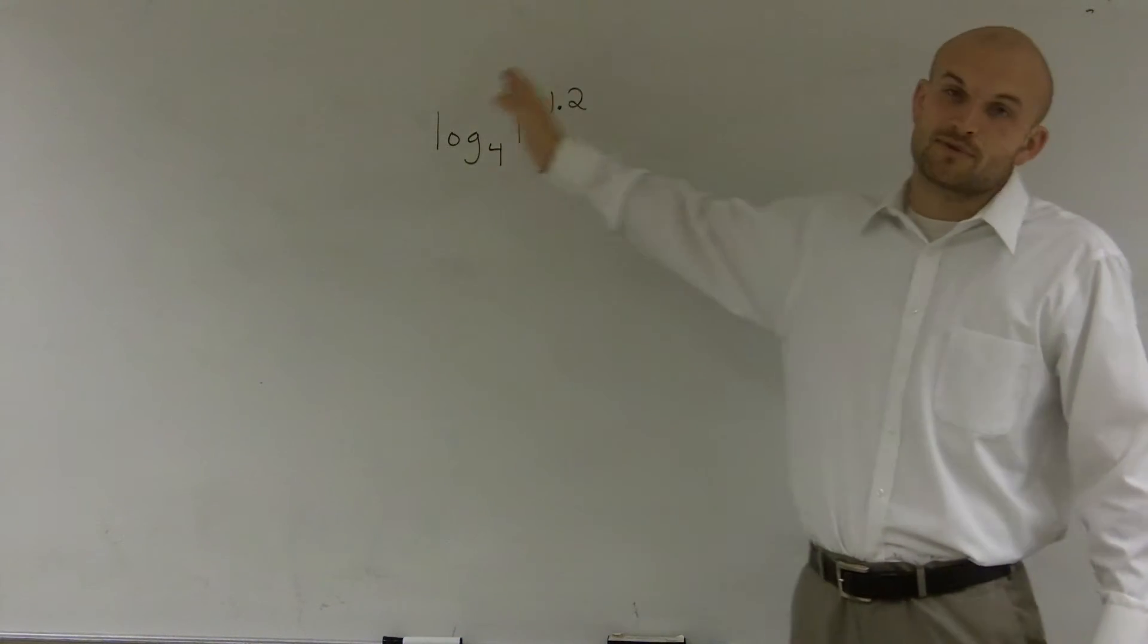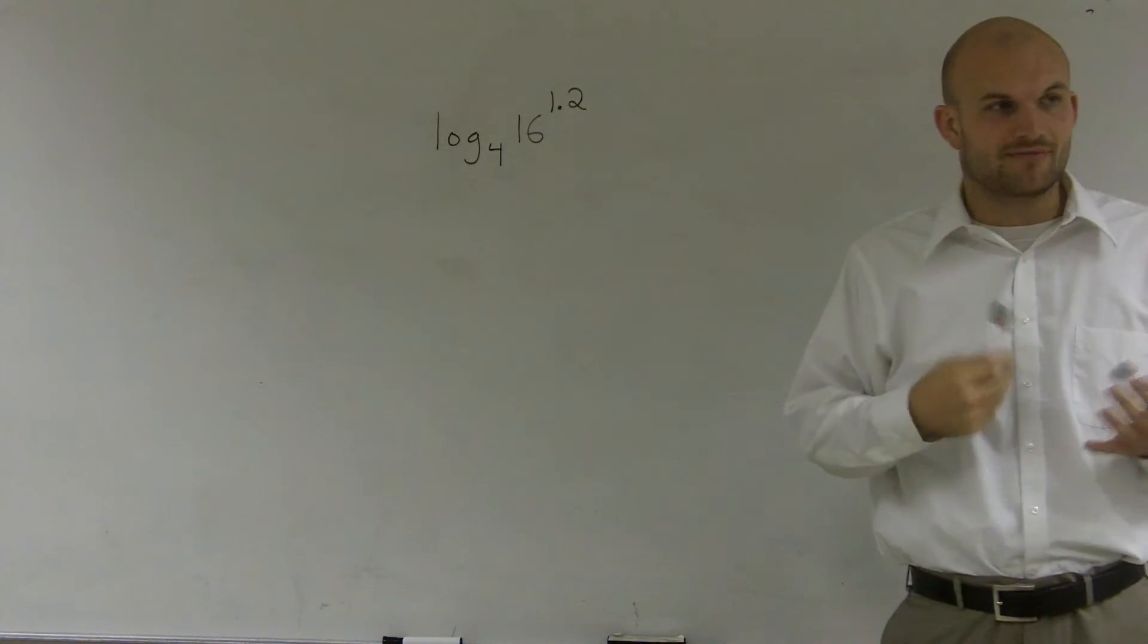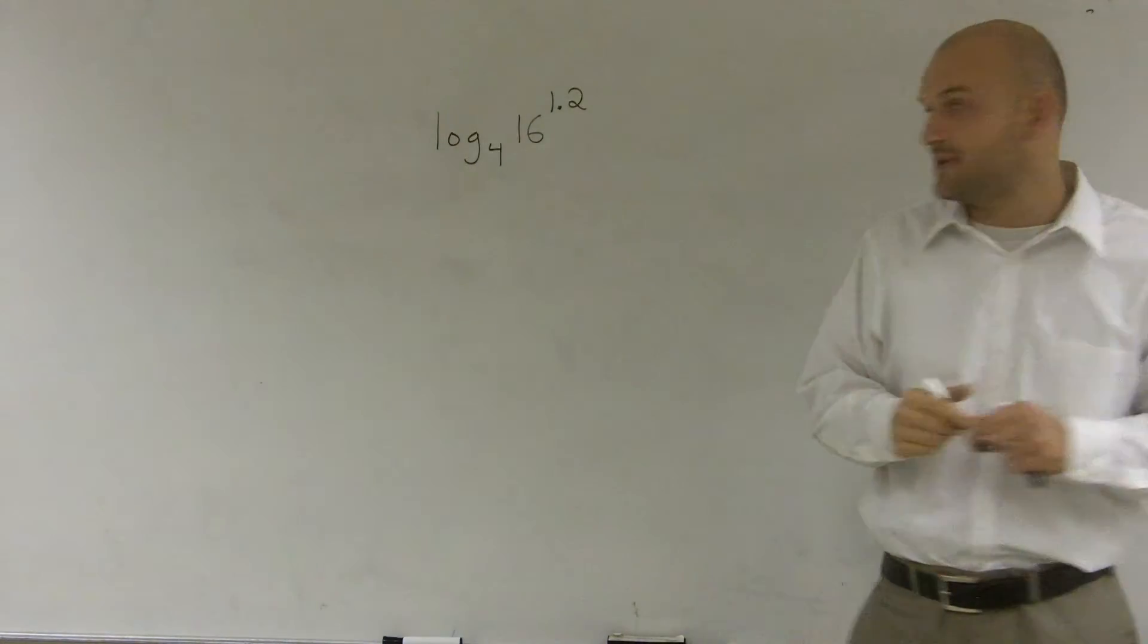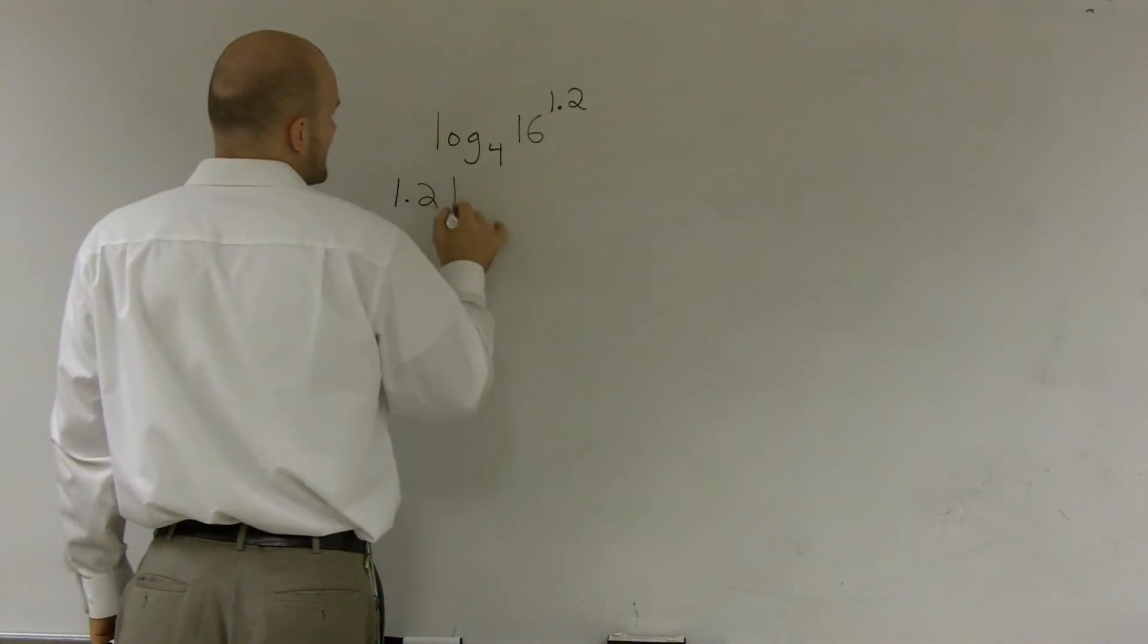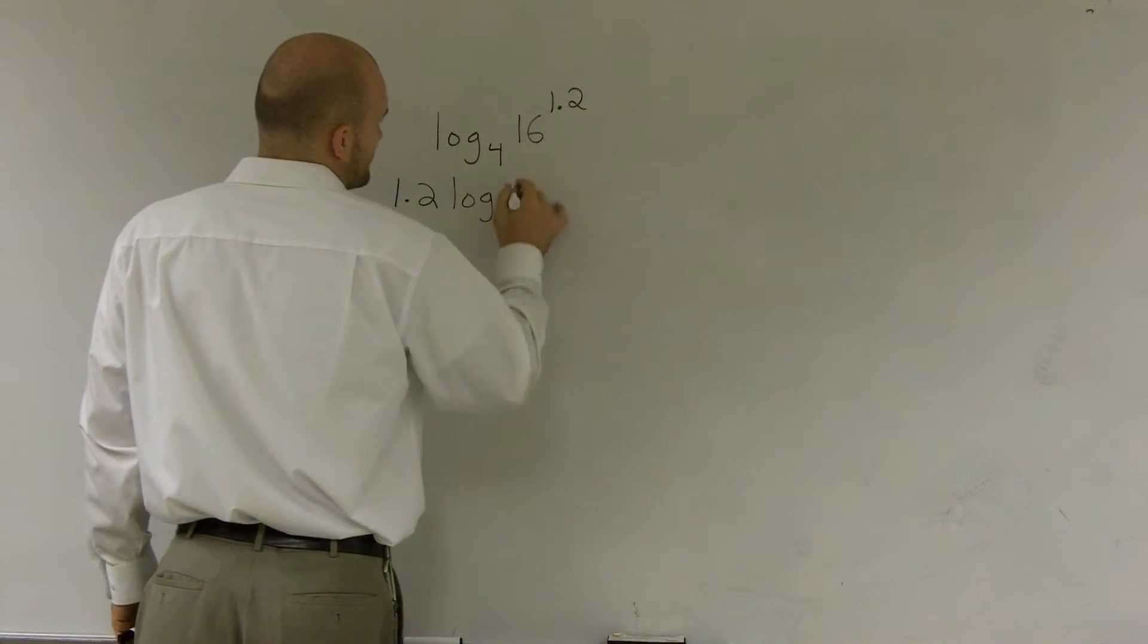So by putting that exponent in front, that's going to help me evaluate my logarithm. The reason being is, this is what it looks like: 1.2 times logarithm base 4 of 16.